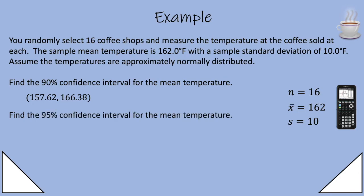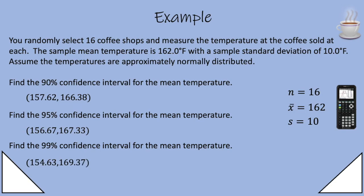Now the 95% confidence interval you do it the same way and you get 156.67 to 167.33. If you also want to find the 99% confidence interval you can, and you'd get 154.63 to 169.37.